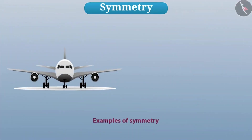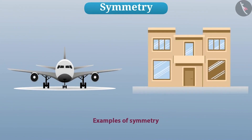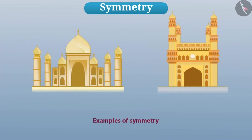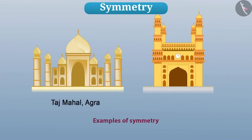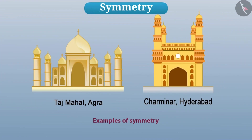Symmetry is also often taken care of in making objects such as aircraft, houses, and many other things. Many buildings like the Taj Mahal of Agra and Char Minar of Hyderabad are famous for their architecture. The Taj Mahal and Char Minar are suitable examples of symmetry. Look at their pictures on the internet.